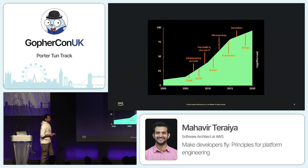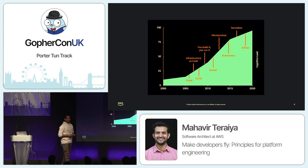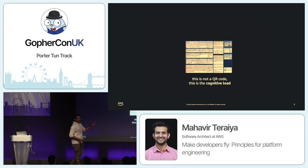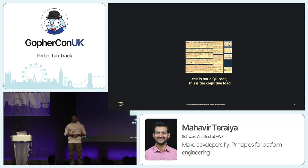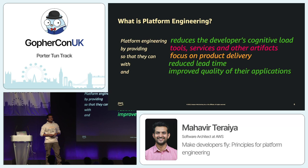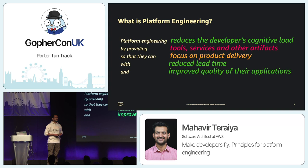If we dive deeper and look at how technology is evolving, we realize that every other day there is a new tool name that can solve another problem. That increases the cognitive load on developers. And just by the way, what's on screen is not a QR code — that is the cognitive load on developers. With this much complexity, we need to understand how platform engineering can help. In a nutshell, platform engineering is any repeatable mechanism which can reduce the cognitive load of developers while improving their quality and productivity.